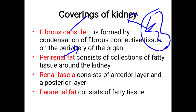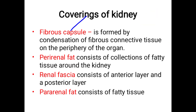Outside the fibrous capsule is the perirenal fat, which is a collection of fatty tissue around the kidney. Next is the renal fascia, which has an anterior and a posterior layer. The outermost covering is the pararenal fat, which is more posteriorly placed and acts as a cushion for the kidney.